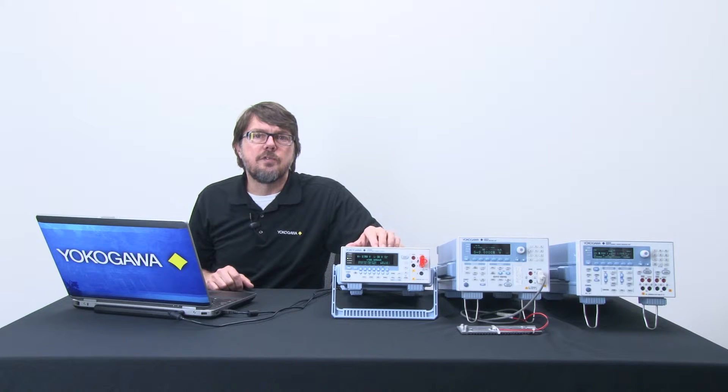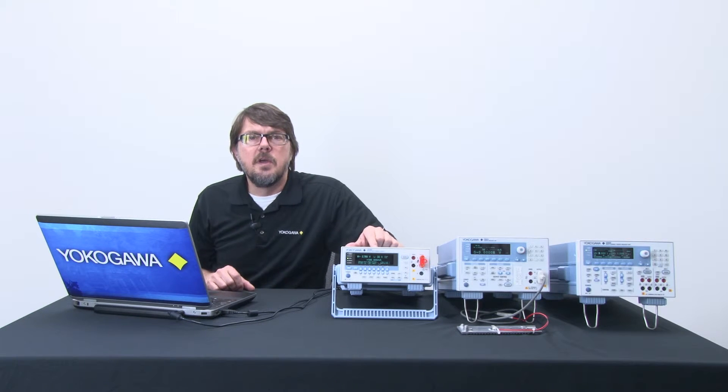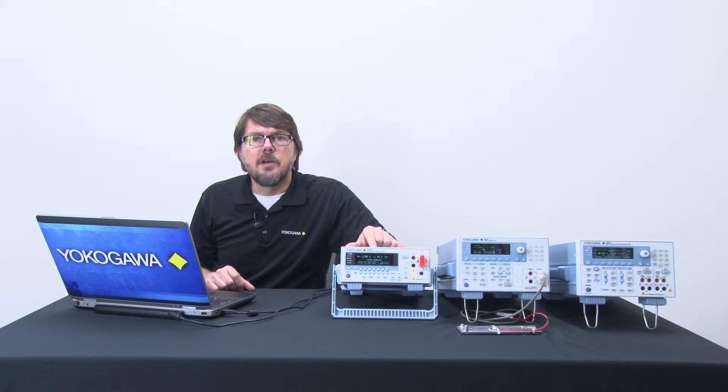I have a silicon diode which will be forward biased by the GS200 set up as a sweeping voltage source. The GS200 will step from 0 volts to 1 volt in 50 millivolt increments and will also pause and measure the current at each voltage step.